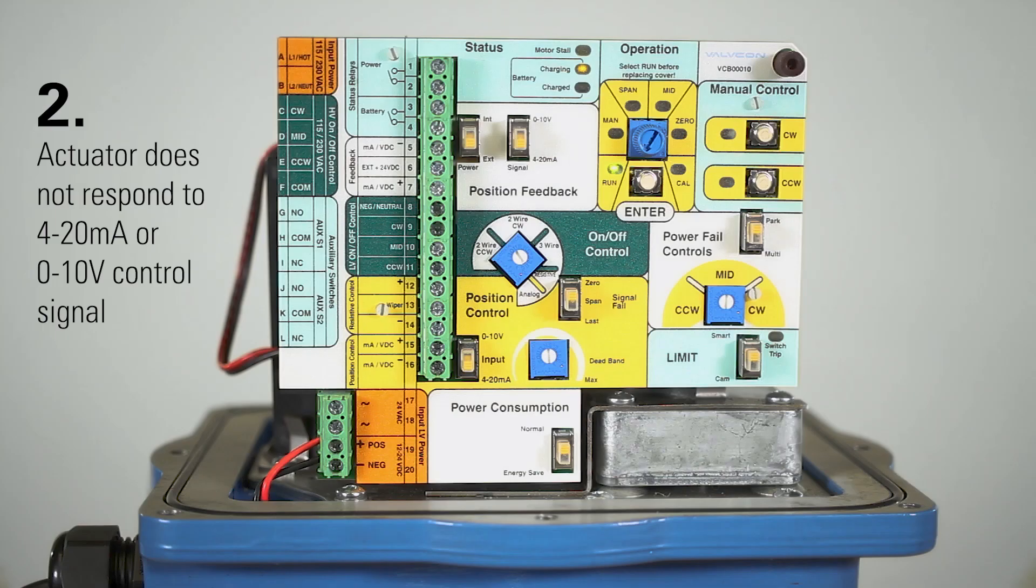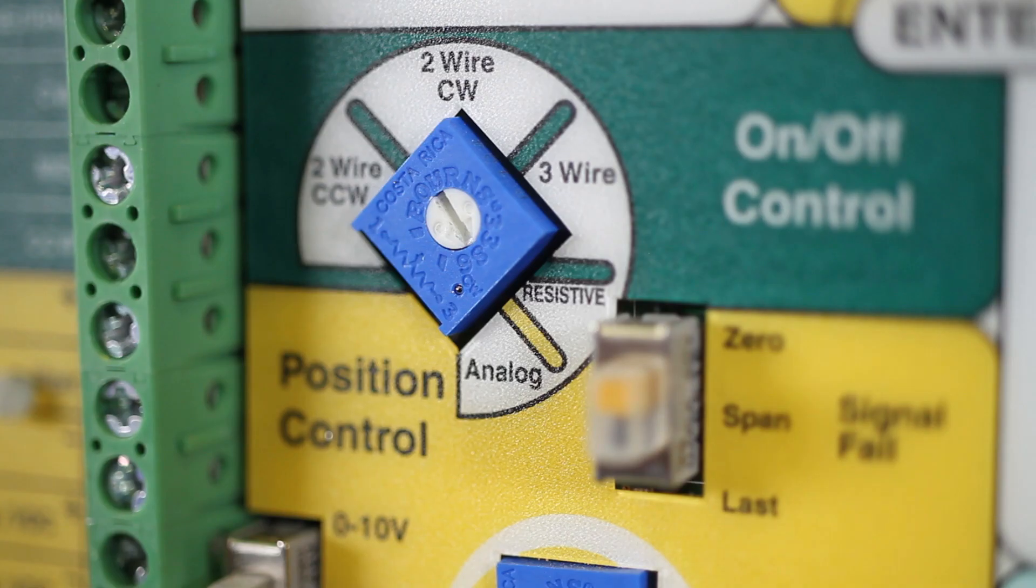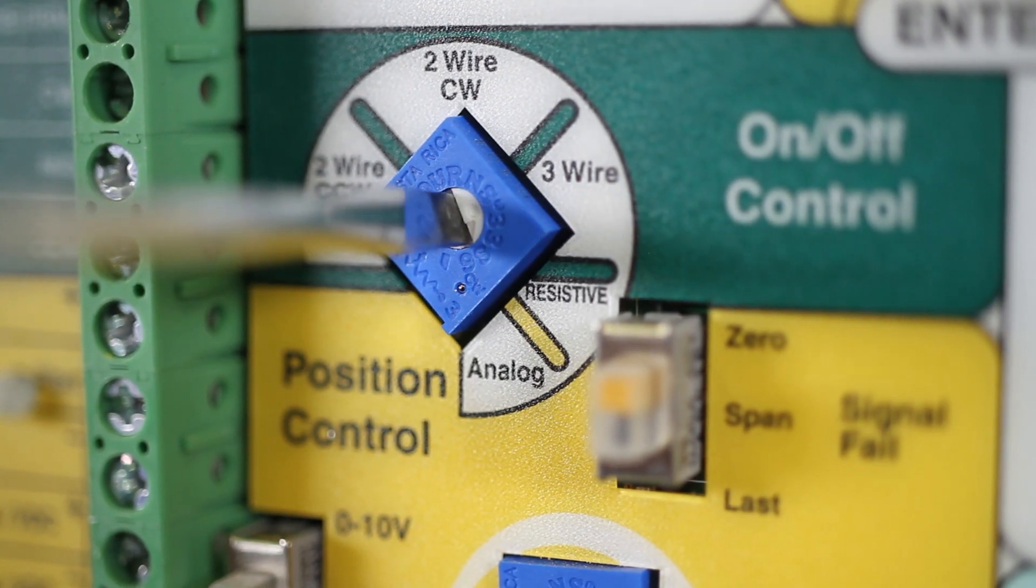If your actuator does not respond to 4 to 20 milliamp or 0 to 10 volt control signal, check that analog position control mode has been selected by fully rotating the dial clockwise.